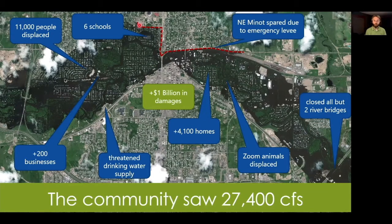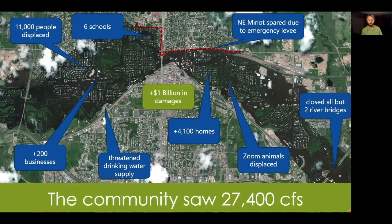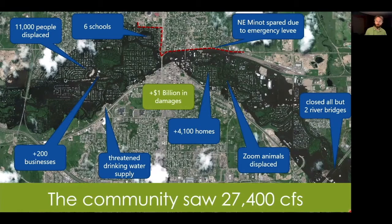There was one area in the north of Minot that stayed protected—a red line indicating an emergency levee. But the rest of town, the levees were not big enough to withstand the flood. Six schools were inundated. Over 11,000 people were displaced. 200 businesses affected. Their drinking water supply was threatened—they did have to do a boil water order, though fortunately their drinking water treatment plant was spared. Over 4,000 homes were damaged. The zoo animals were displaced; some were temporarily brought to the zoo here in St. Paul. Most of the bridges through town were closed or overtopped—only two bridges remained open: the Broadway Bridge and the 83 Bypass Bridge. All in all, it was over a billion dollars in damages.